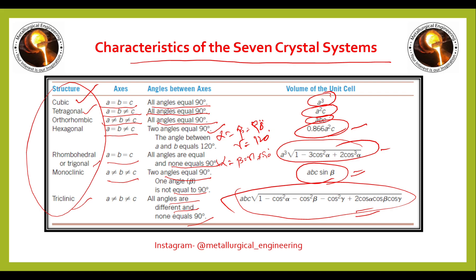Overall, among all seven crystal systems, cubic is the most symmetric crystal system and triclinic is the least symmetric crystal system. Now we will discuss the symmetry associated with all these seven crystal systems.